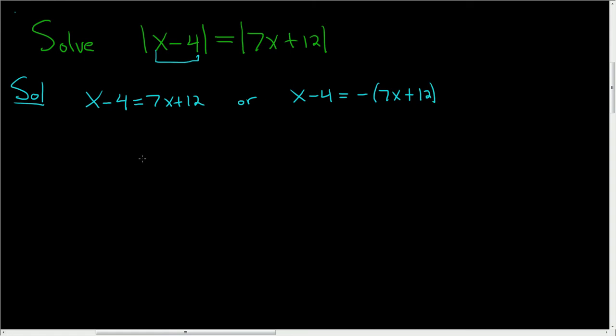And we just go ahead and solve these equations. So in the first equation, subtract the 7x. So it looks like x minus 7x is minus 6x, and we still have the minus 4, and this is equal to 12. Then add the 4. So minus 6x is equal to 16.